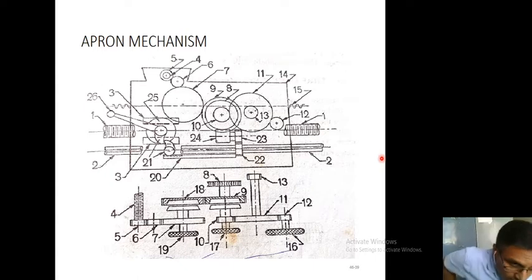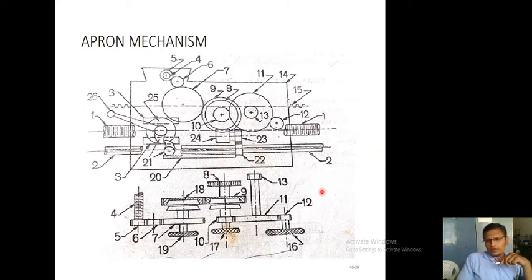Now let's discuss about this apron mechanism, how apron mechanism is working. If you want to give a manual feed, then here is a 16 number handle having shaft having 12 number gear. That 12 number gear or pinion mesh with this 11 number gear, and 11 number gear is mounted on shaft having 13 number pinion.